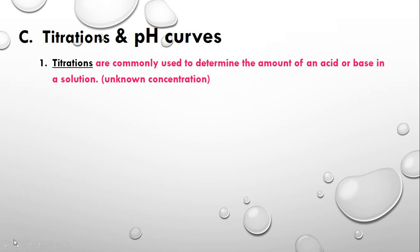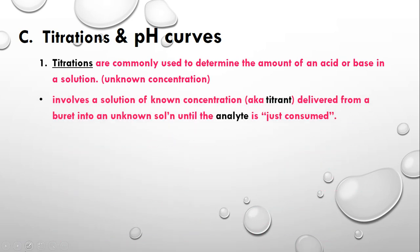A titration is a procedure commonly used to determine the amount of an acid or a base in a solution, and typically you are titrating a known concentration with an unknown concentration. You can also apply titrations to redox reactions. It involves a solution of known concentration called the titrant, delivered from a burette into an unknown concentration solution called the analyte — the root word from 'analyze,' because you are analyzing it.